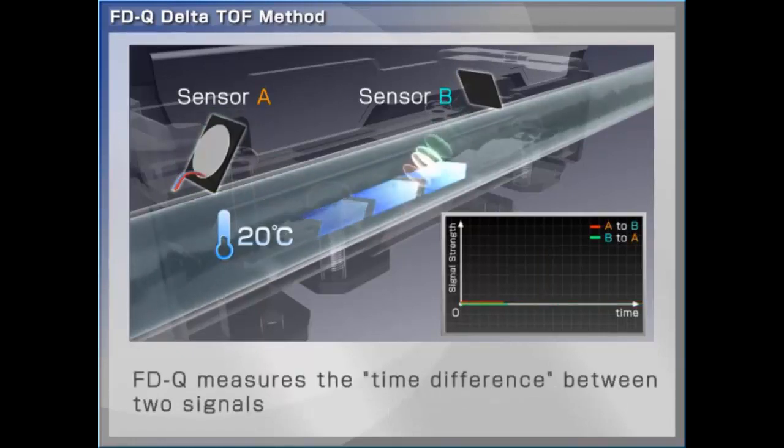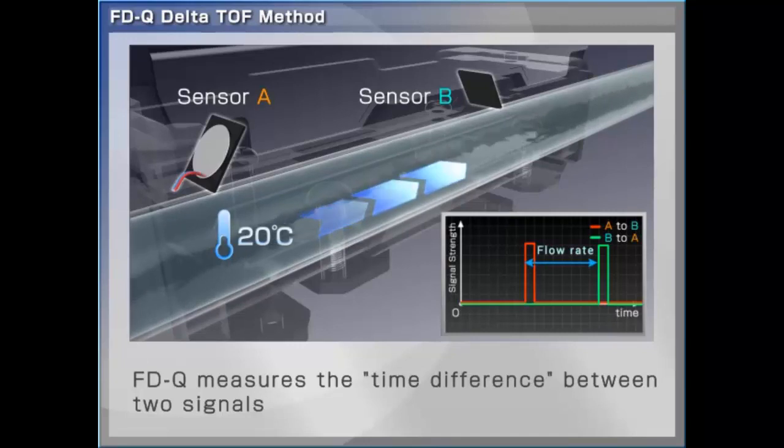When the liquid begins to flow through the pipe, we see that it takes longer for the pulse to travel from B to A than A to B. By looking at the difference in time between these two signals, we can stably determine the flow rate.